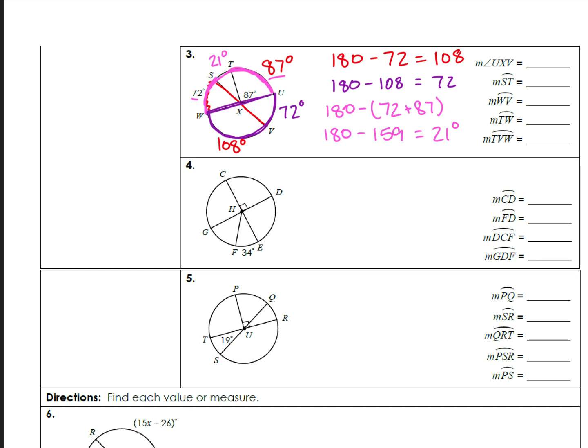We use diameters to fill in all the missing pieces. The measure of angle UXV corresponds to arc UV, which is 72 degrees. Arc ST is the short way from S to T - that's the 21 degrees we just found. Arc WV is two letters, the short way, from W to V - that's 108 degrees.